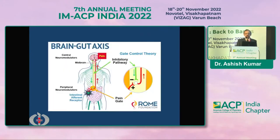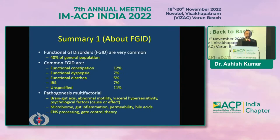Brain-gut axis is very important — the brain has an inhibitory pathway in the spinal canal, and pain is perceived by the brain. When there is visceral hypersensitivity in the intestine, it is perceived as severe pain by the brain. Functional gastrointestinal disorders are very common, affecting up to 40% of the general population. They include functional constipation up to 12%, dyspepsia 7%, diarrhea 5%, IBS 7%, and unspecified 11%. The pathogenesis is multifactorial, involving brain-gut axis, abnormal motility, visceral hypersensitivity, psychological factors, gut microbiome, gut inflammation, increased permeability, bile acids, CNS processing, and gate control theory.